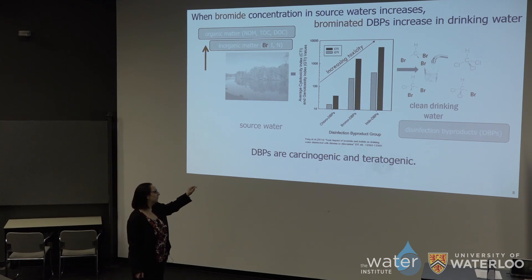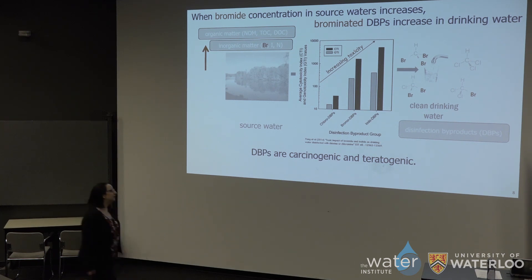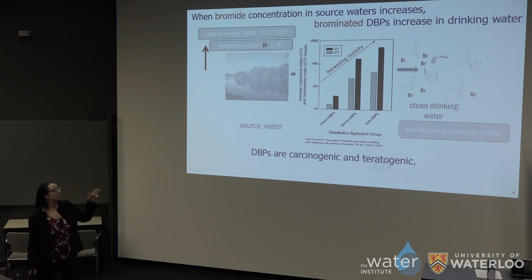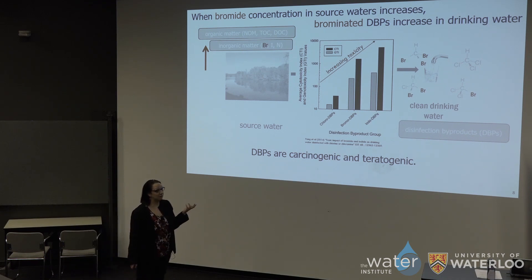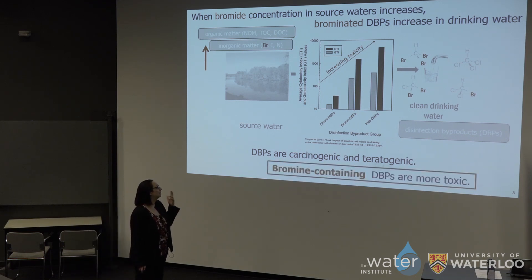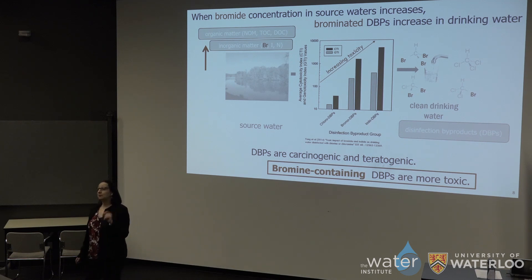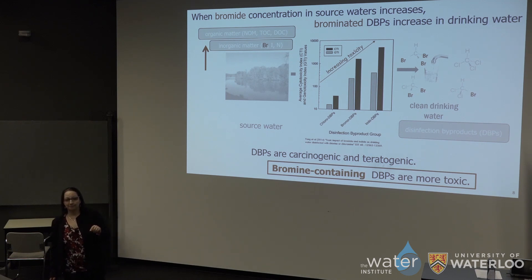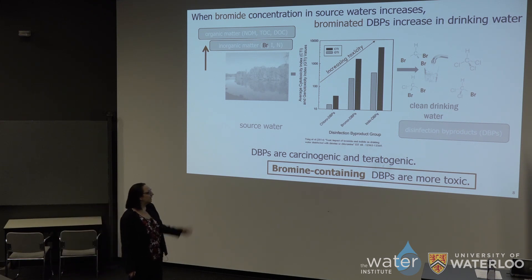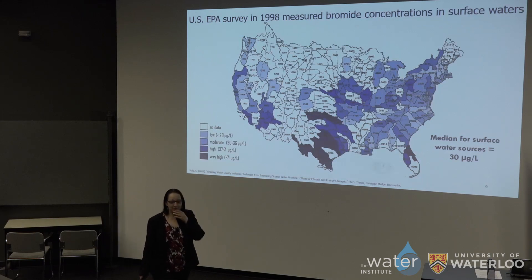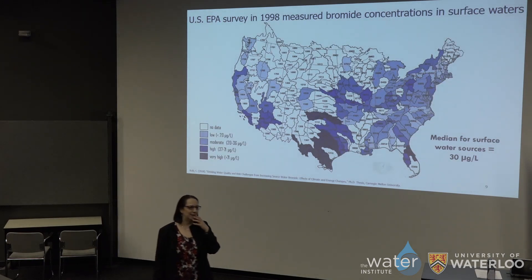This is work from Yang et al. 2014 out of Michael Pleva's lab at the University of Illinois, looking at the cytotoxicity and genotoxicity of chlorinated, brominated, and iodated DBPs. As you can see, brominated DBPs are significantly more carcinogenic and teratogenic than the chlorinated analogs. Bromine-containing DBPs are something we want to avoid — particularly bromine-containing DBPs. So where does that bromide come from, and how much is there anyway?